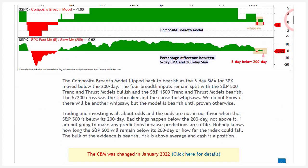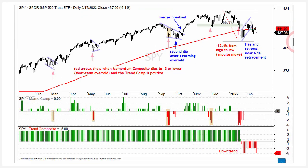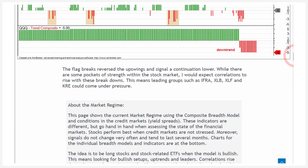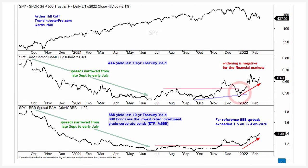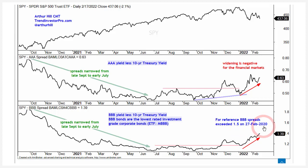I think we're in a bear market regime right now. I also post commentary — we were looking at flag breaks in SPY and QQQ a week ago, which preceded the declines we saw over the past week. On the market regime page, I update yield spreads, and we're also seeing a widening in yield spreads, especially the triple-B spreads, which have been widening in 2022. Those BBB spreads exceeded one and a half on February 27, 2020. They're not yet at one and a half now, but they're moving in the wrong direction — showing stress in the credit markets, which is negative for financial markets.